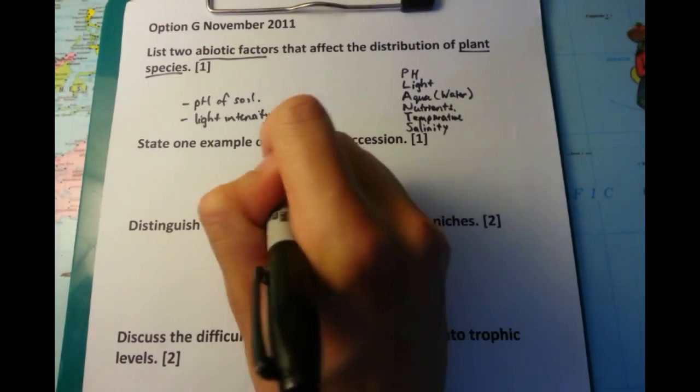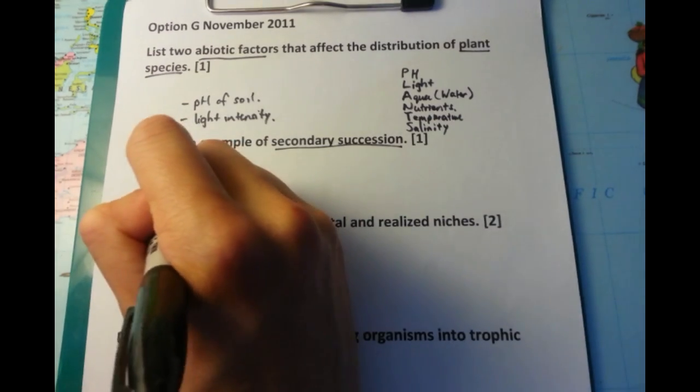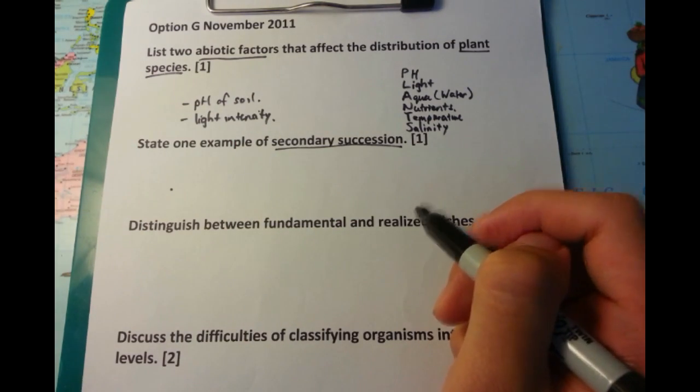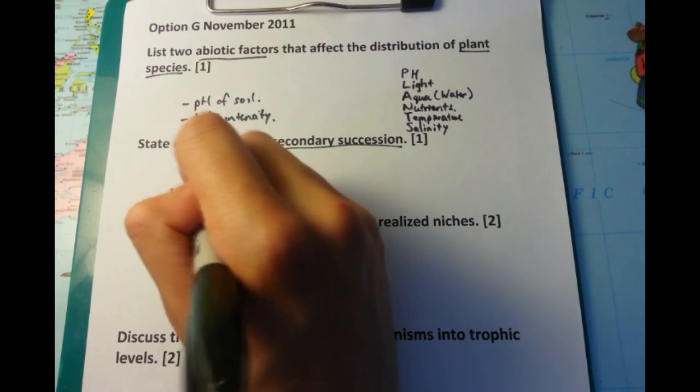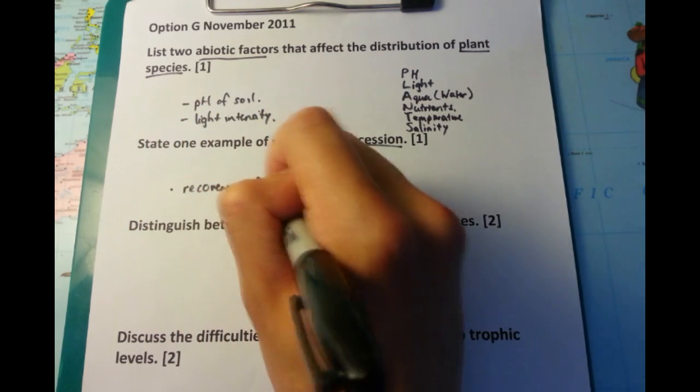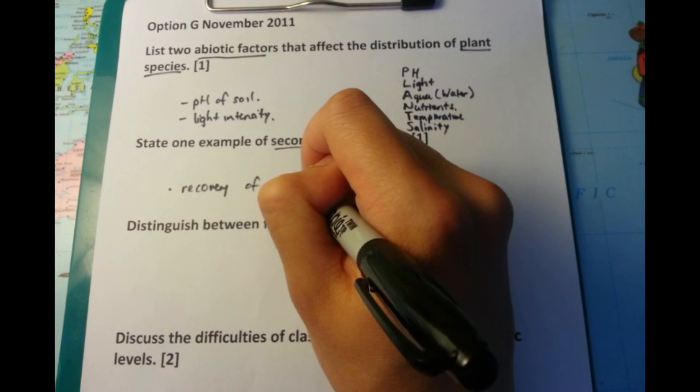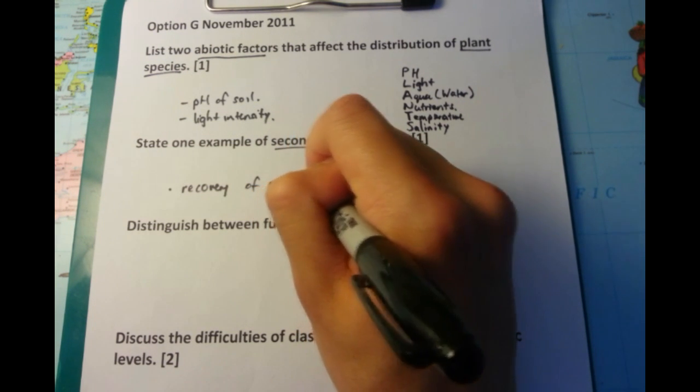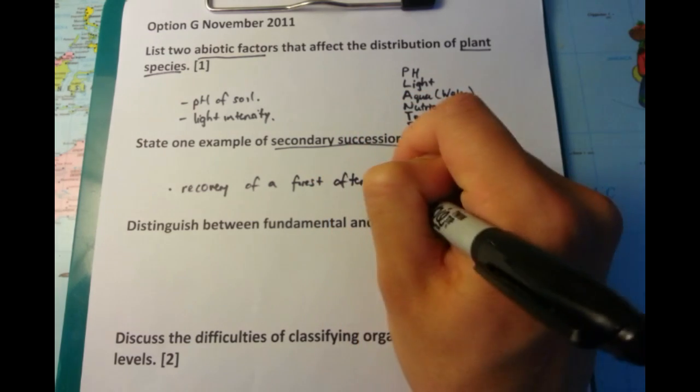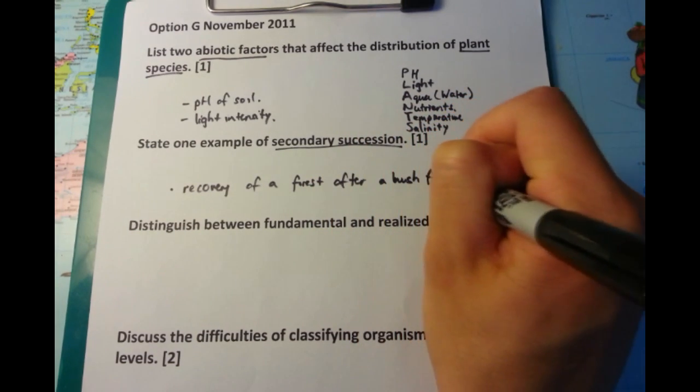Next question is, state one example of secondary succession. And this is as opposed to primary succession. Secondary succession is where an area has been, and in that area there's previously been life, but that has been reduced because of a particular event. And in this case, I'm going to talk about the recovery of a forest after a bush fire.